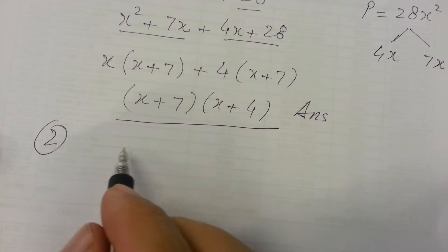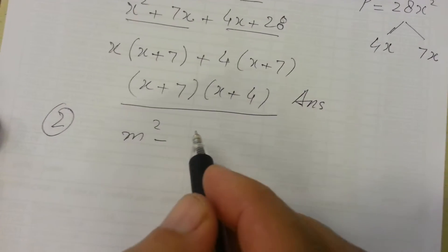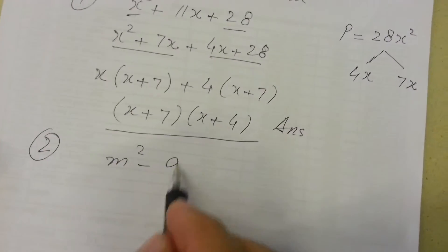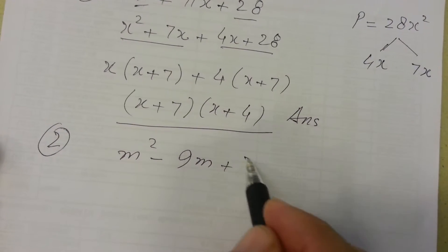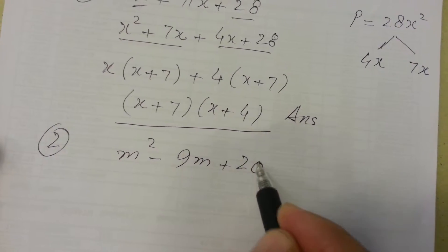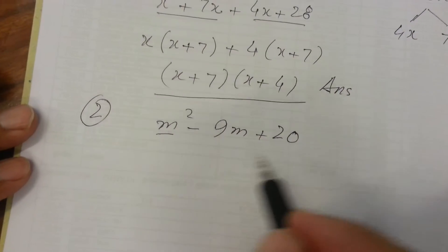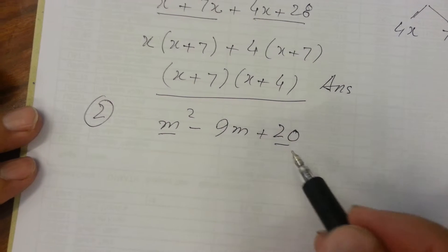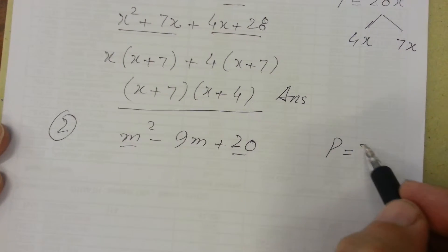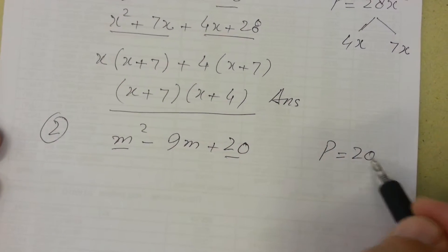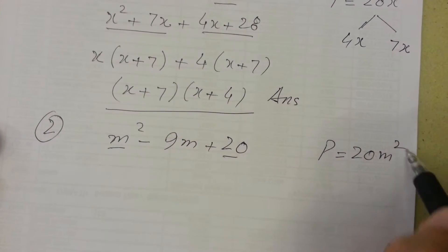Question 2: m squared minus 9m plus 20. First of all, we multiply the first term with the last term. The product is 20m squared.